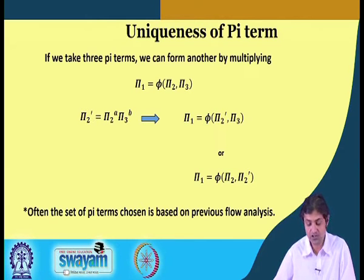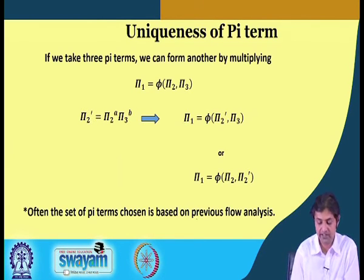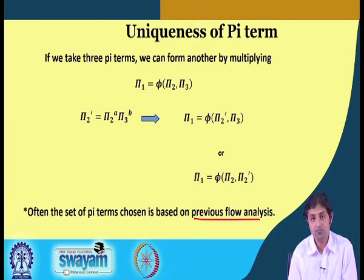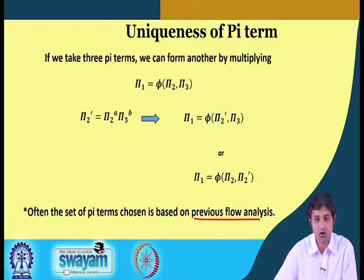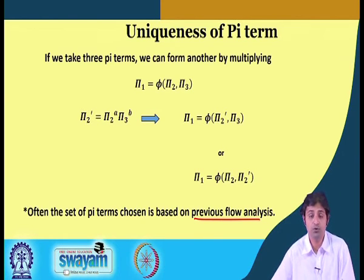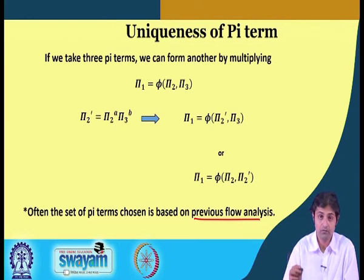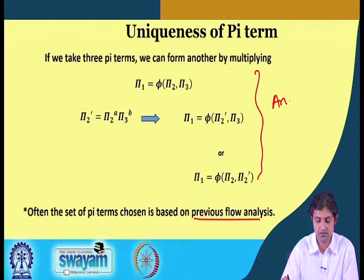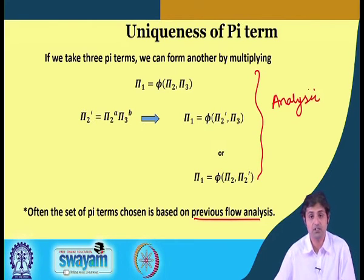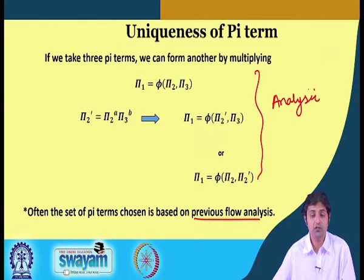Often the set of Pi terms chosen is based on previous flow analysis. What Pi terms will appear is generally guided by prior experience. When a flow problem arises, terms like Reynolds number and Froude number are very important, and because of those previous experiences we try to modify our dimensionless Pi terms — by multiplying with other dimensionless numbers — to obtain those well-known sets of dimensionless Pi terms.